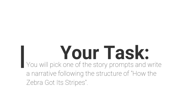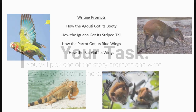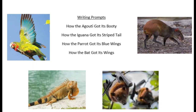In just a moment, you're going to see the prompts that you can pick from, and also a planning sheet that will help you map out your story. Here are your options: you could write about how the agouti got its booty, or how the iguana got its striped tail, how the parrot got its blue wings, or how the bat got its wings. Take a look at the images of the animals. You could also pick a different feature, or a different animal entirely — if you want to pick a completely different animal and write a story based on that, that's absolutely fine.